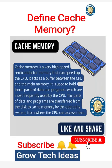Define cache memory. Cache memory is a very high-speed semiconductor memory that can speed up the CPU. It acts as a buffer between the CPU and the main memory.